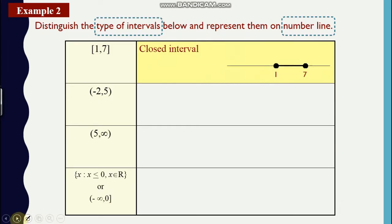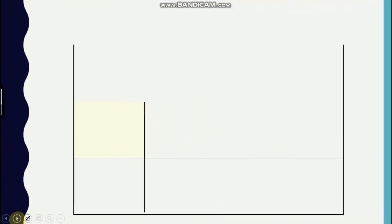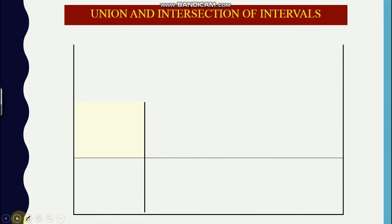Okay, so now since it's a closed interval, full dot at 1, full dot also at 7. Open interval both with empty circles. As well as if you have 5 till infinity, so to the right, and then negative infinity zero to the left. Okay, so now next.